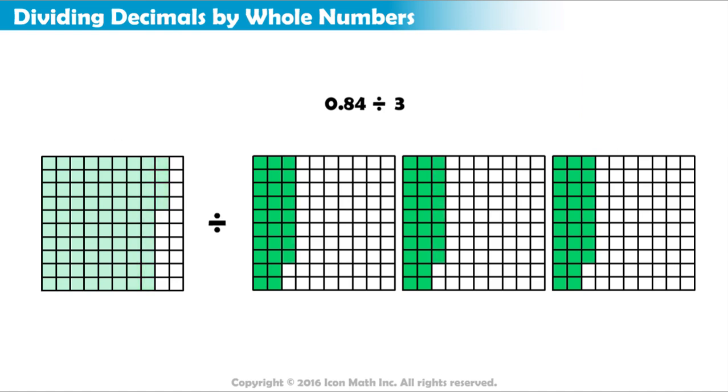Notice that we do not have anything left in our original array. Each of our 3 arrays has 2 columns and 8 squares, or 2 tenths and 8 hundredths. So the result of dividing 84 hundredths by 3 is 28 hundredths.